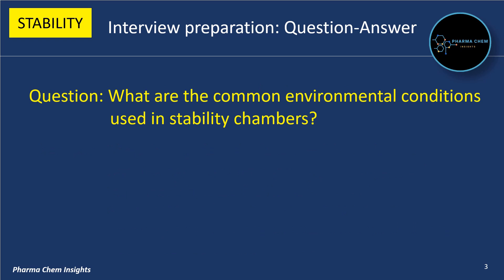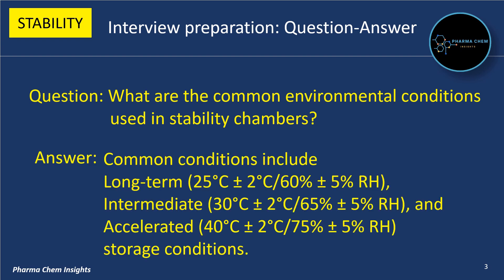Next question: What are the common environmental conditions used in stability testing? Common conditions include long-term: 25°C ±2°C, 60% ±5% RH; intermediate: 30°C ±2°C, 65% ±5% RH; and accelerated: 40°C ±2°C, 75% ±5% RH storage conditions.